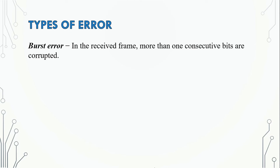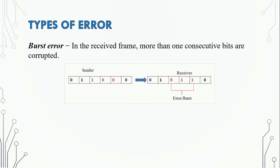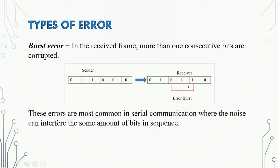In a burst error, more than one consecutive bits are corrupted in the received frame. We will see the sequence of consecutive bits where changes occur — for example, a figure showing 00100. These errors are most common in serial communication where noise can interfere with some amount of bits in the sequence, causing 0-to-1 and 1-to-0 changes.